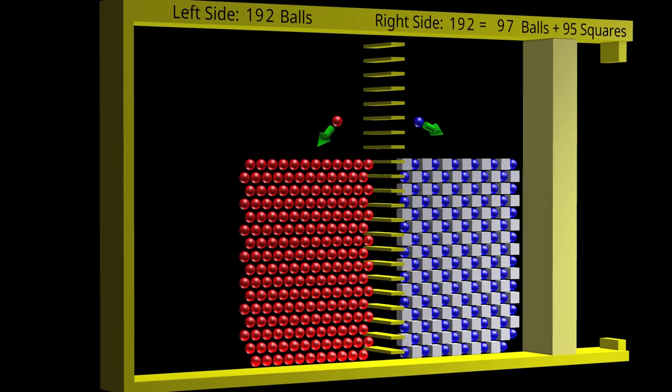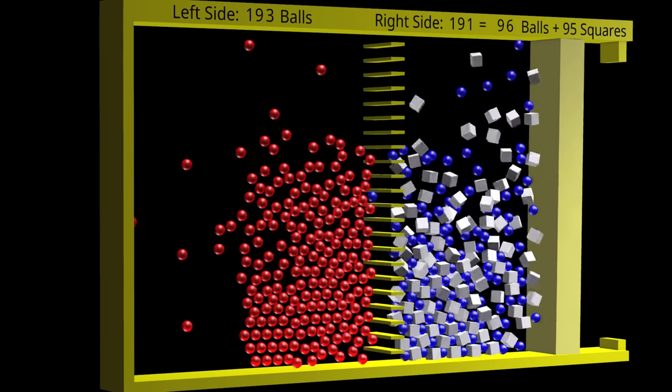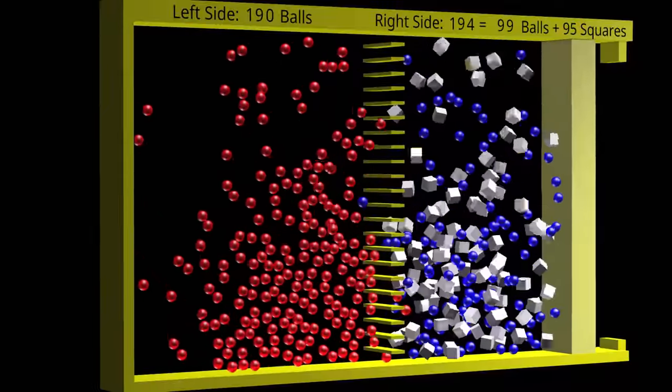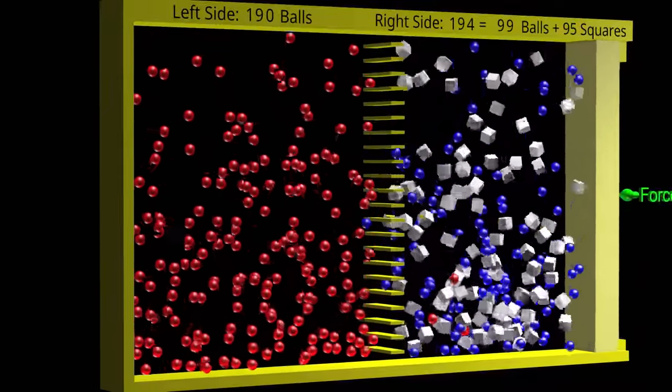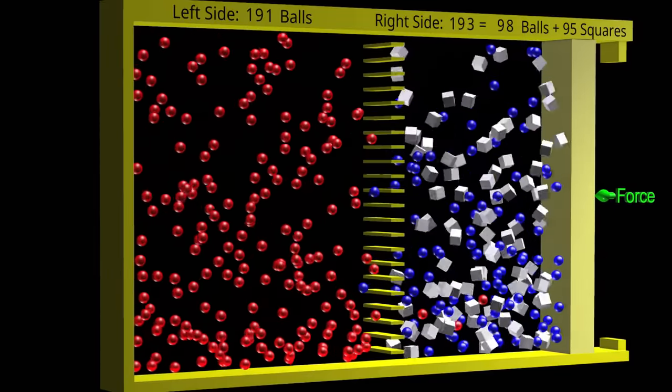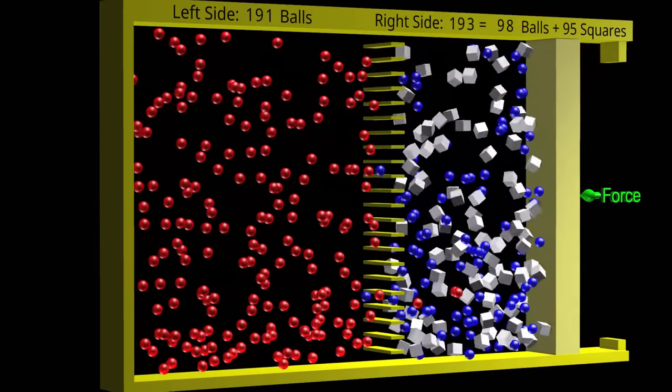Initially, there is a net migration of balls from the left side to the right side. But once we apply a force to the wall on the right, there is a net migration of balls from the right side to the left side.